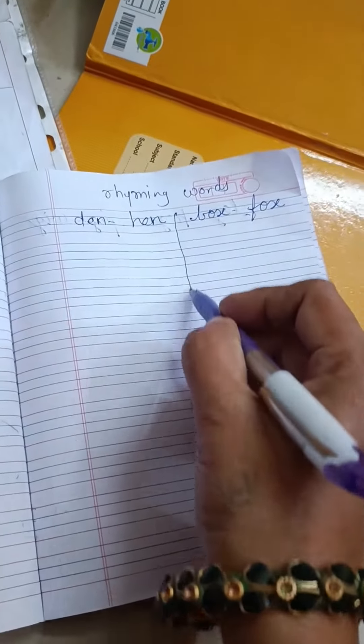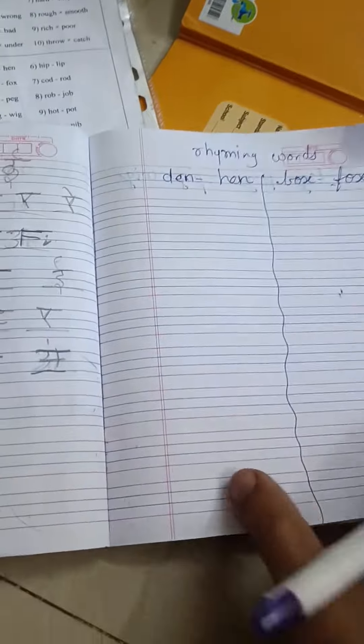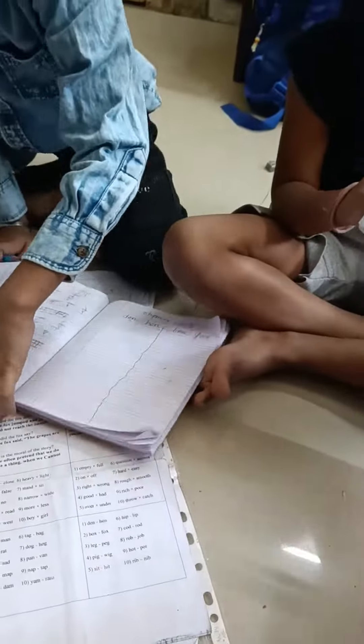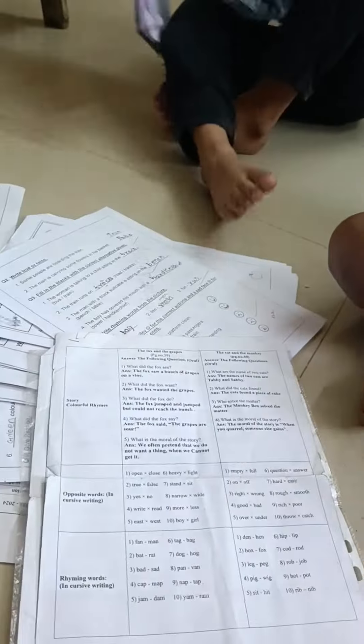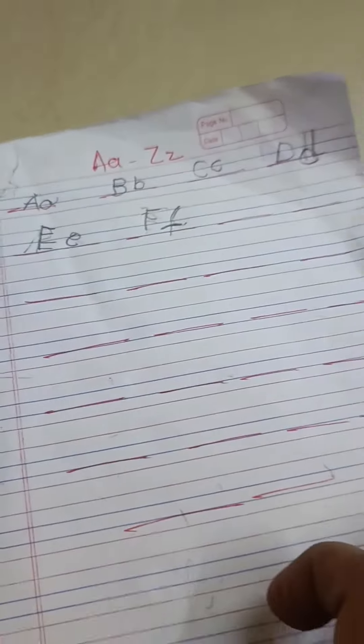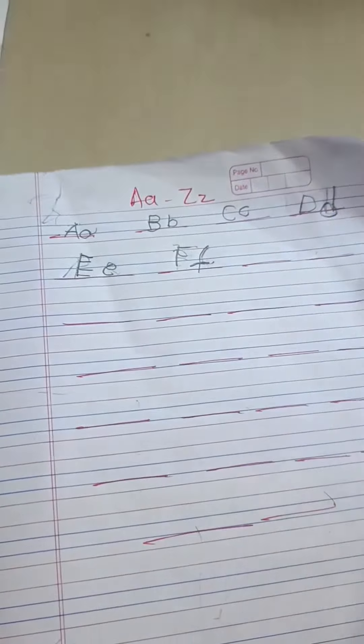Okay? Write here. D-E-N, H-E-N. Say and write. Show me yours. A to Z Capital and Small Letters. Look at your writing. Come, come this side. Ho gaya? Tumhara likha words batao.